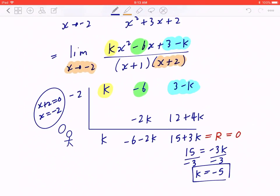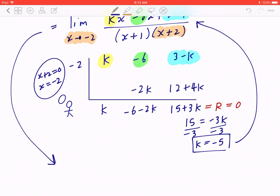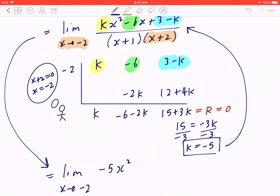Now what this really means is you can go back, plug in k to be -5. So now, if you look at the new limit, it's going to be the limit as x is approaching -2 of -5x² - 6x + 3 - (-5) divided by (x + 1)(x + 2).